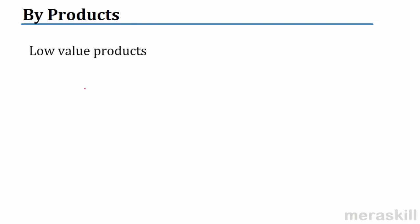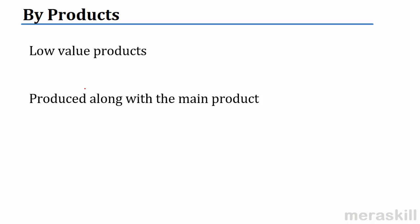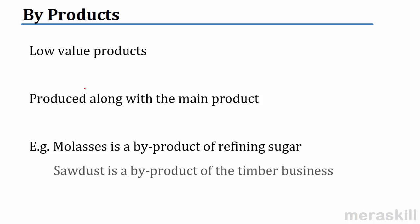By-products on the other hand are low value products which are produced along with the main product. So while joint products all have significant market value, by-products are low value products. For example, when you refine sugar, it is possible that molasses are low value. Molasses are just a by-product. You can sell them at a very small value. Clear? Sawdust may be a by-product of the timber business.